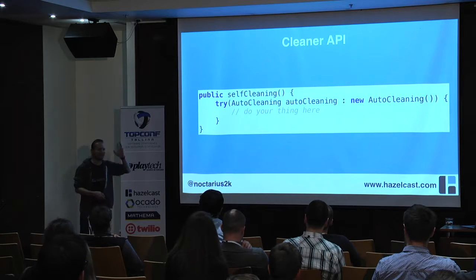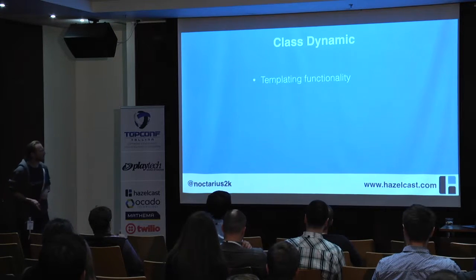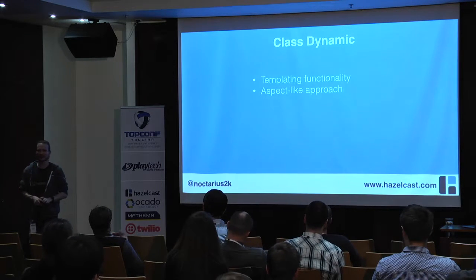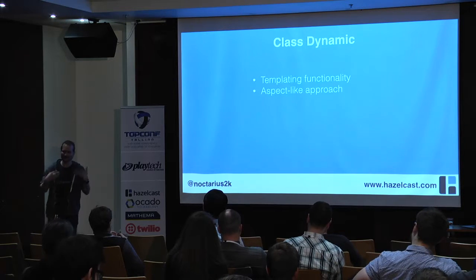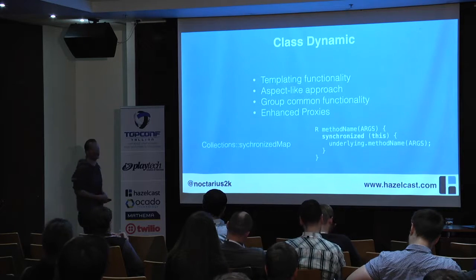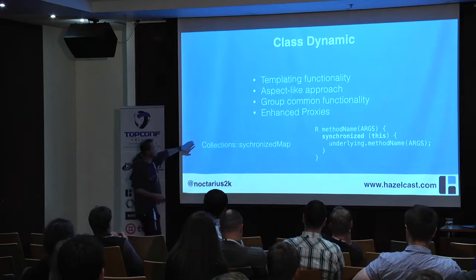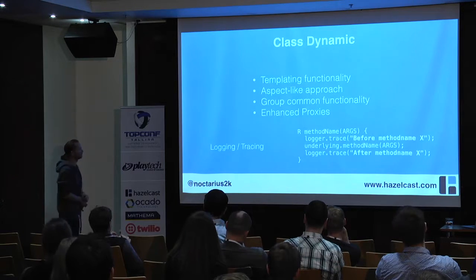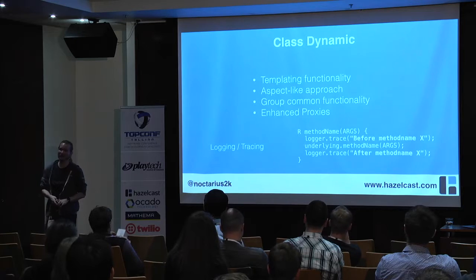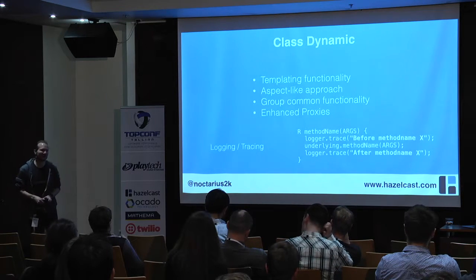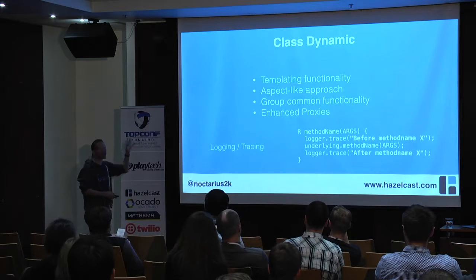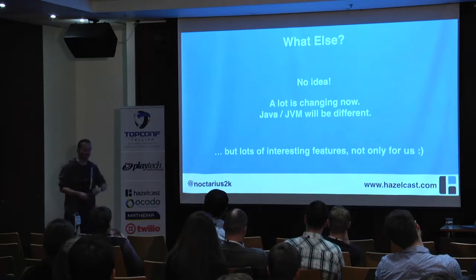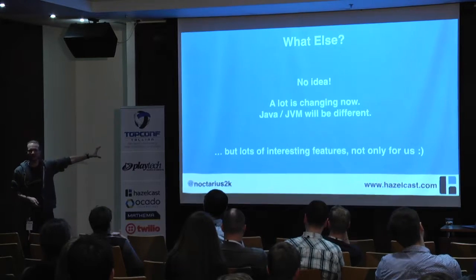We can skip the Cleaner API — this is basically what works inside the scope class for auto-cleanup magic, the slides are online. Class Dynamo — one of the weirdest things. Specialized generics looks like a template; Class Dynamo goes one step further and makes everything a template if you want. You can say 'I want a synchronized map' and your template looks like: method name, synchronized block, underlying call. Logging and tracing are other very interesting use cases. Today we solve these with AOP — aspect-oriented programming.